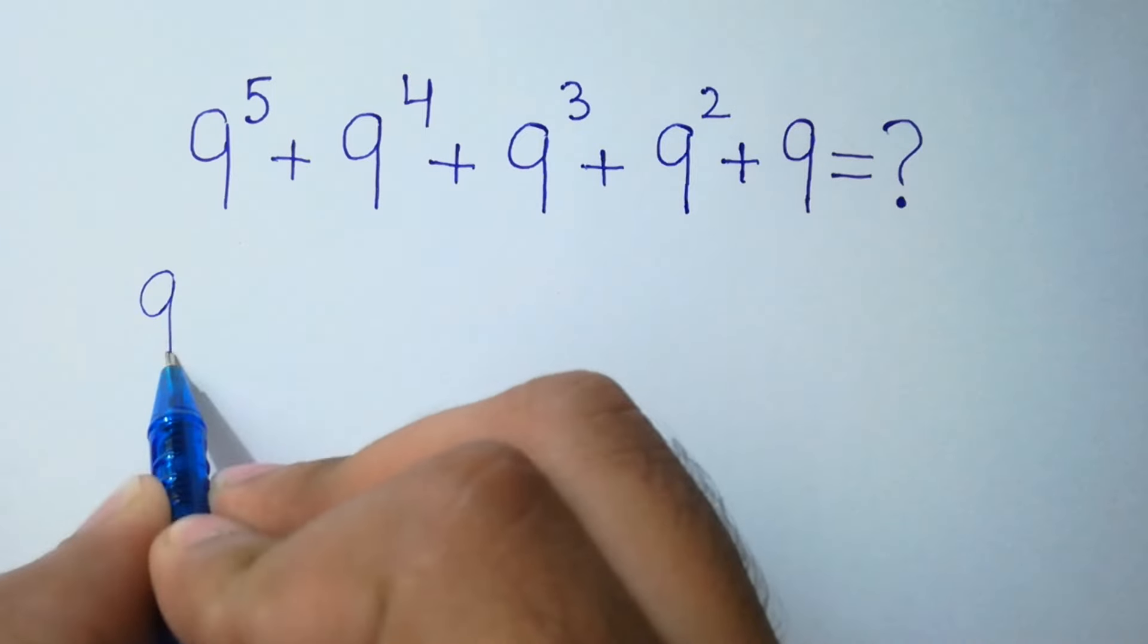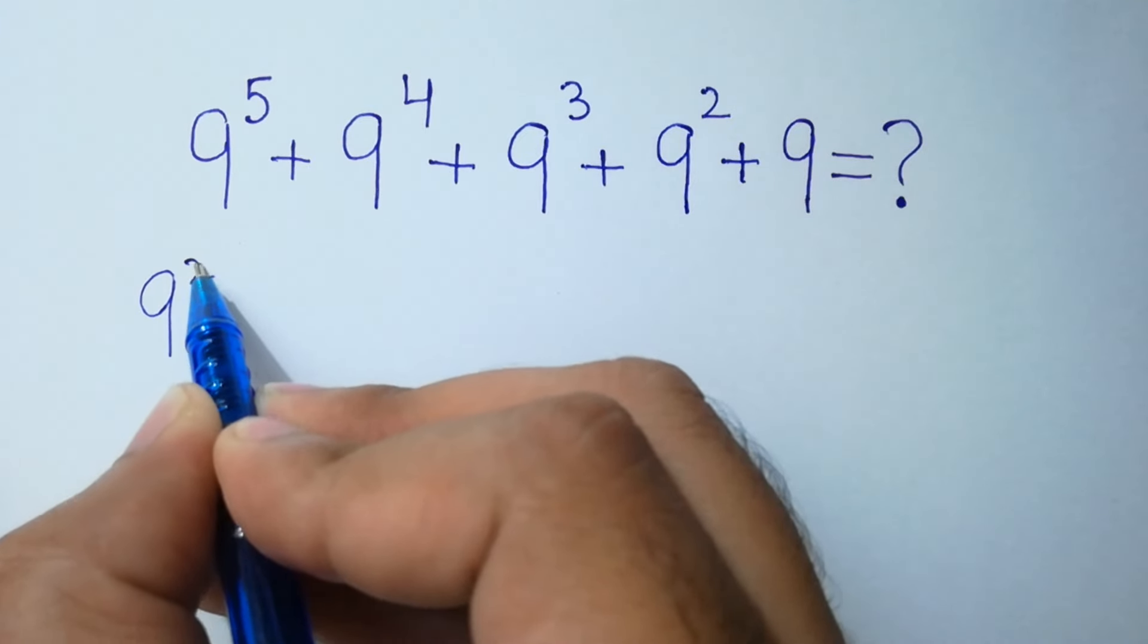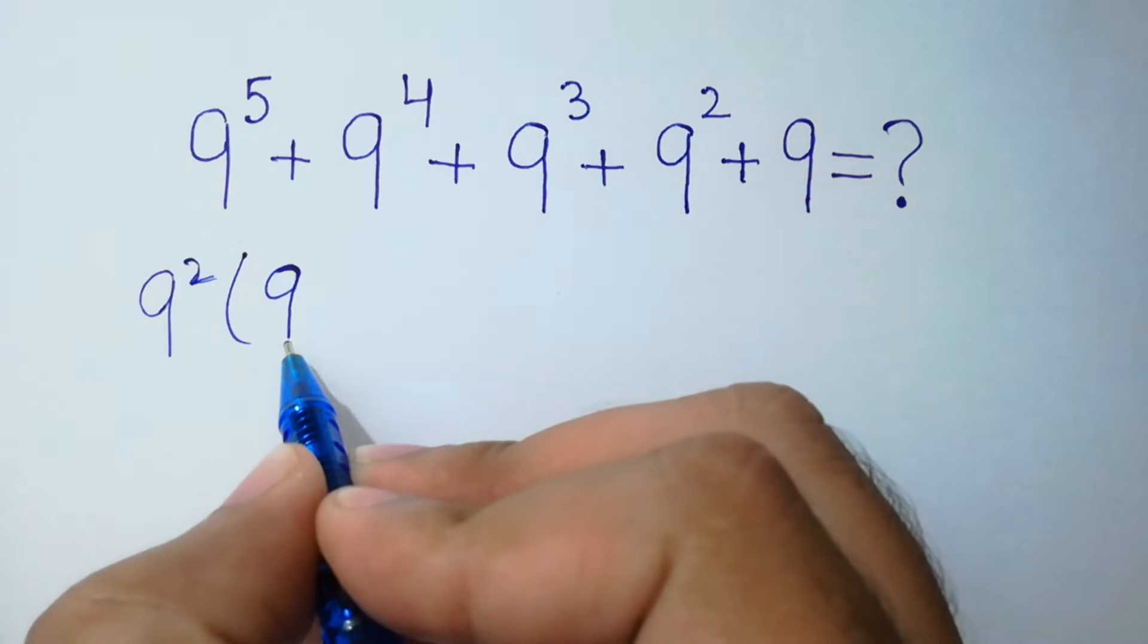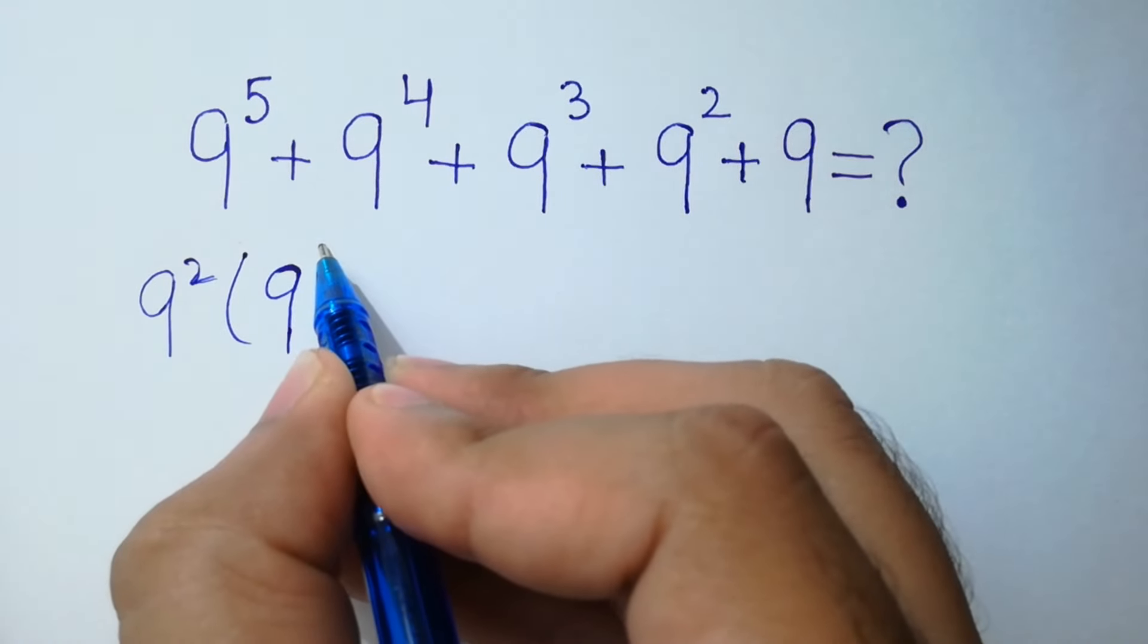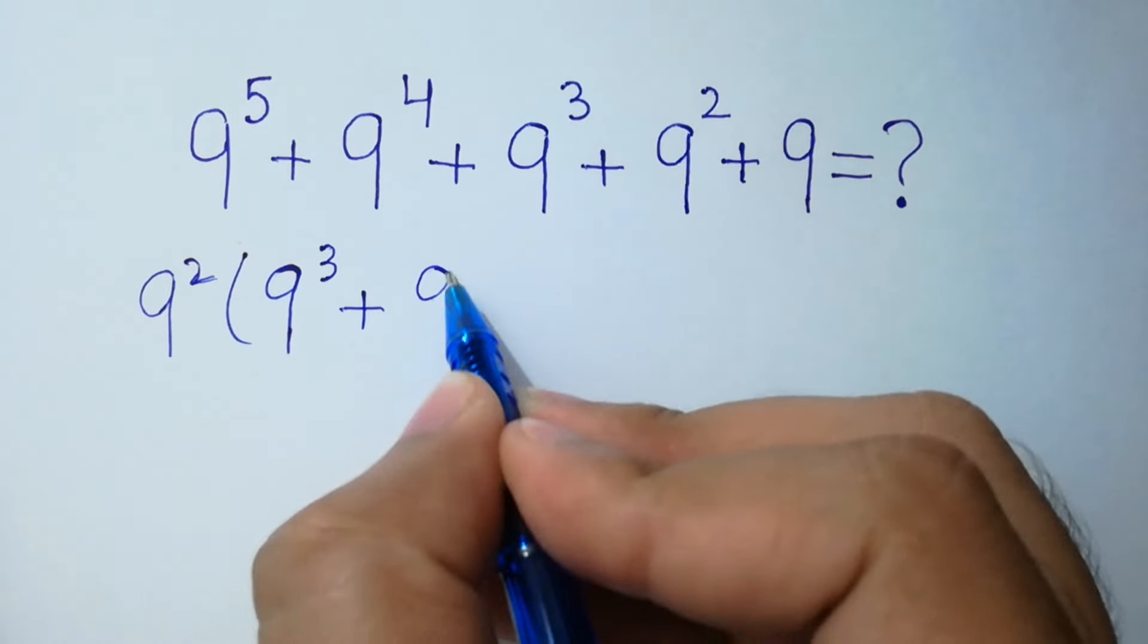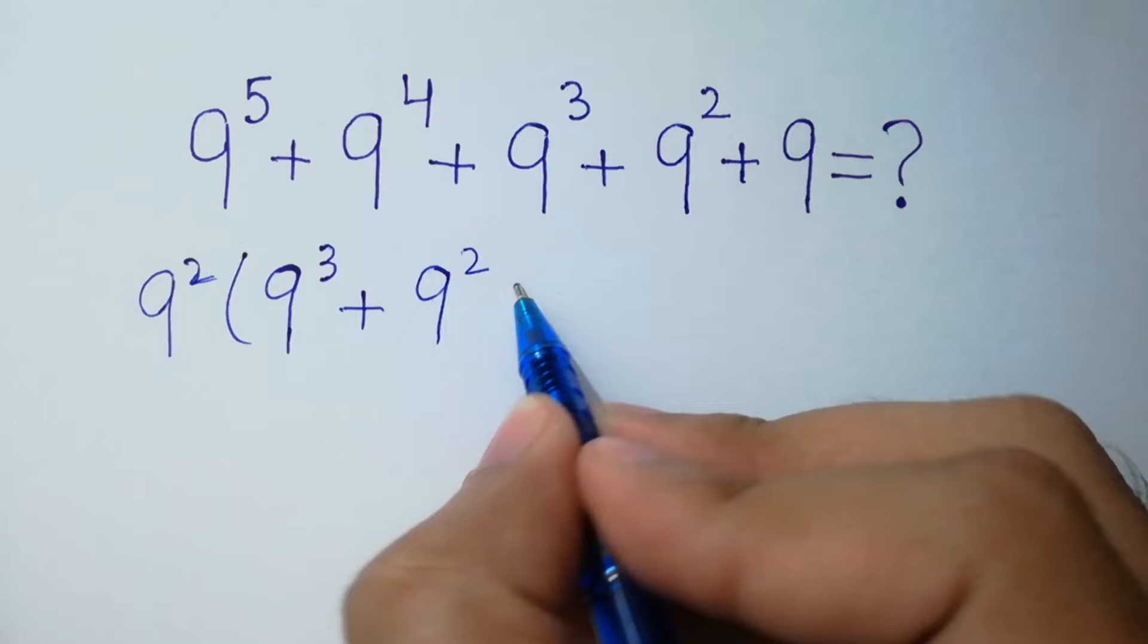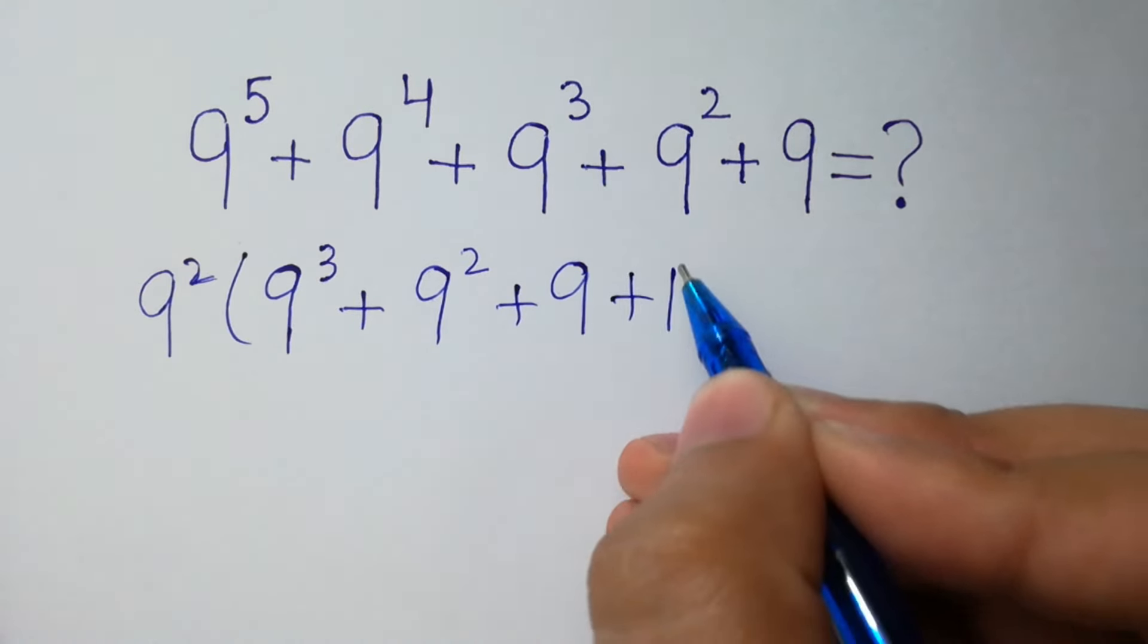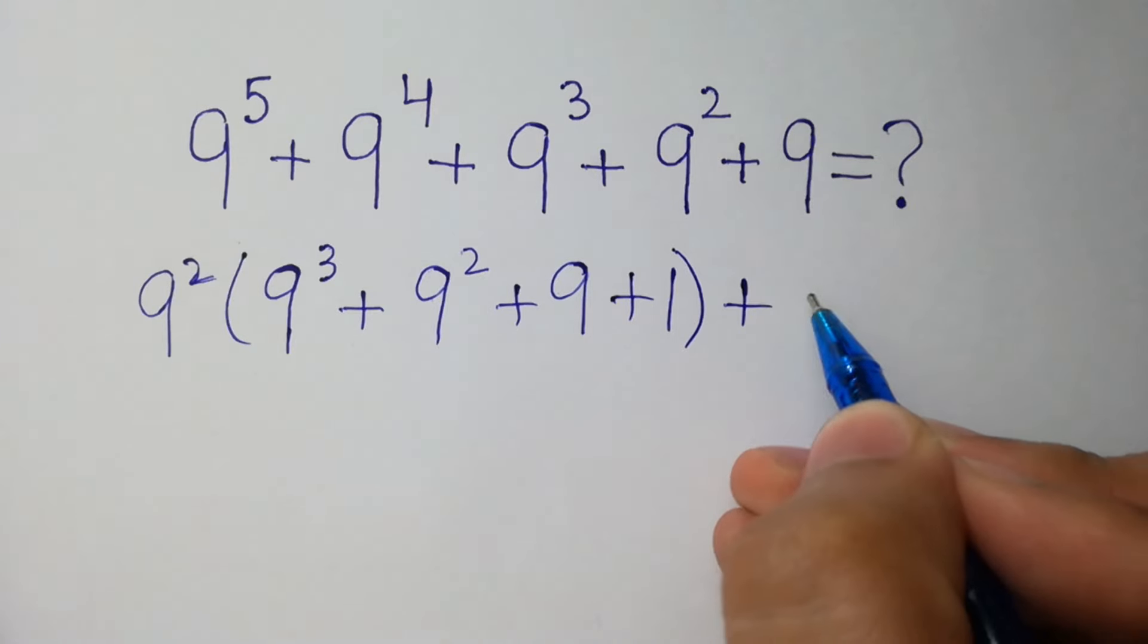We have 9 squared times open bracket, 9 cubed plus 9 squared plus 9 plus 1, close bracket, plus 9. This is our first step.